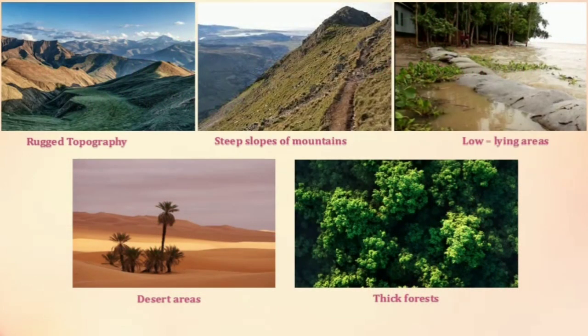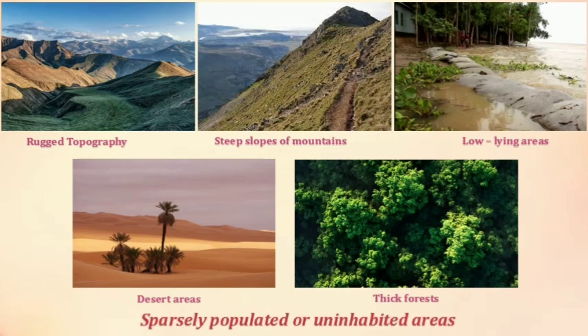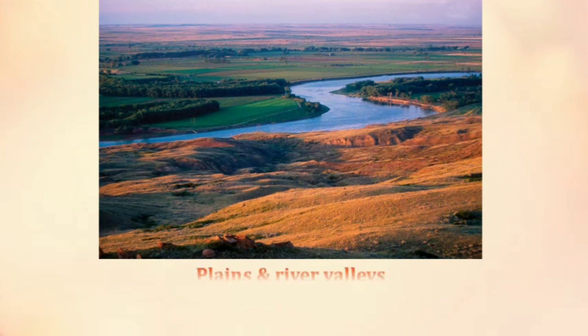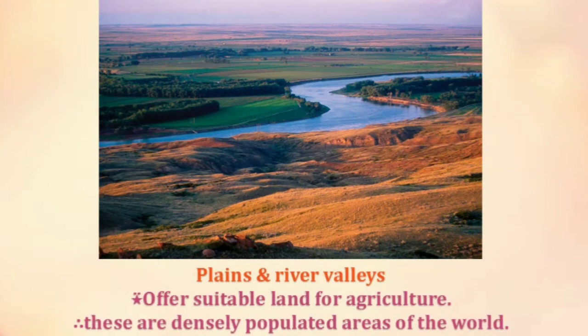The rugged topography, steep slopes of the mountains, low-lying areas susceptible to water logging, desert areas, and thick forested areas are normally sparsely populated or uninhabited. Plains and river valleys offer suitable land for agriculture. Therefore, these are the densely populated areas of the world.